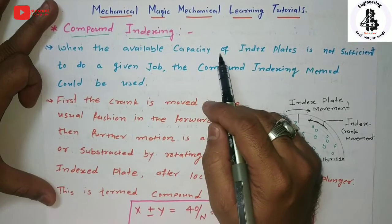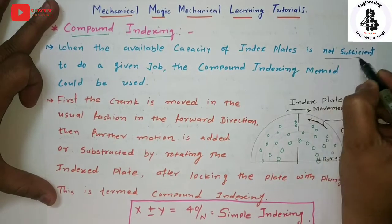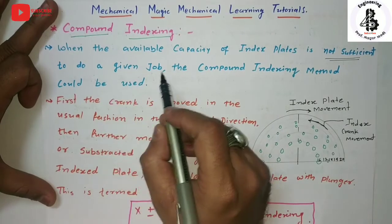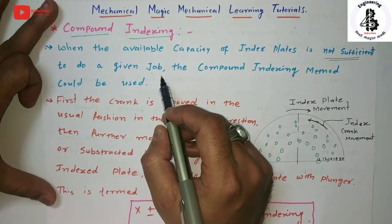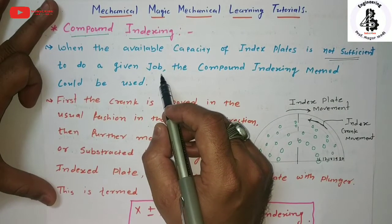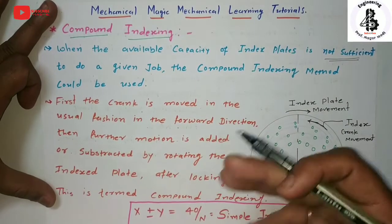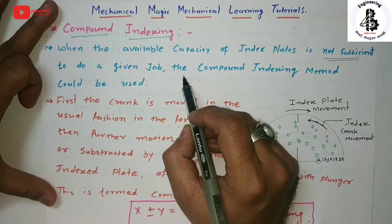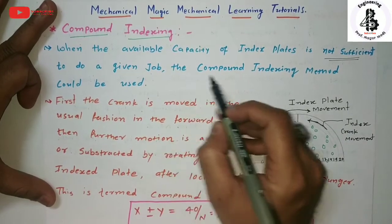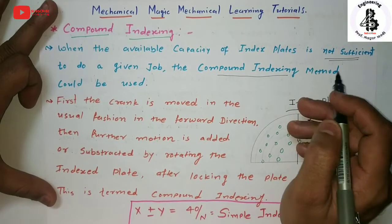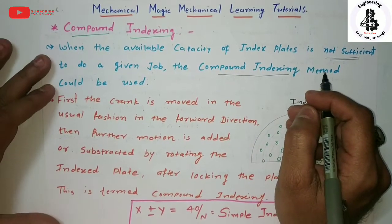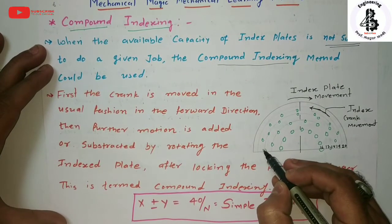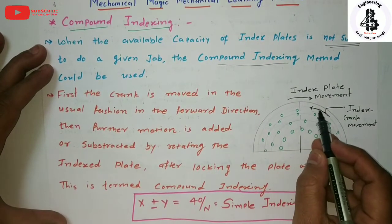When the available capacity of index plates is not sufficient for simple indexing to do a given job - that is, dividing the periphery into an equal number of parts - if you cannot perform that kind of division on your gear blank or achieve the required number of indexes, then the compound indexing method is adopted. In compound indexing, there is an arrangement of index plate movement with different hole circle systems.